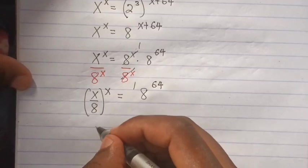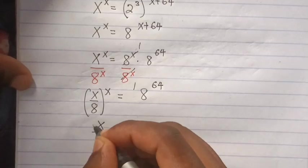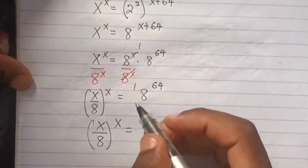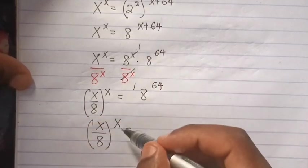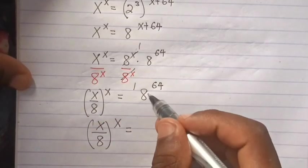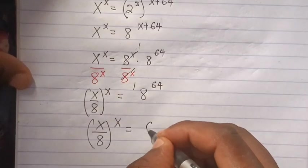Next step, it will be 8 to the x over 8 to the x is equals to this one. We put this side, like this, it will be same as this one, to get 8.